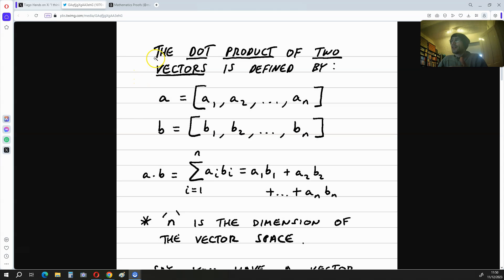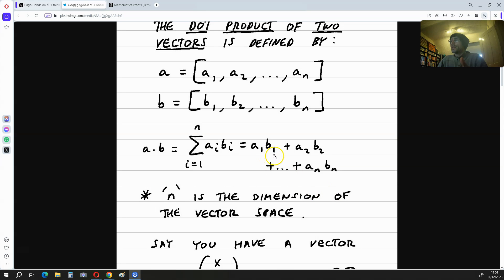The dot product of two vectors is defined by a is a1, a2, all the way up to an, b is b1, b2, all the way up to bn, and when you multiply these two vectors, you get this sum over here, which is a1 times b1 plus a2 times b2 plus all the way up to an times bn. In this case, n is the dimension of the vector space.